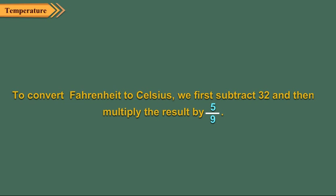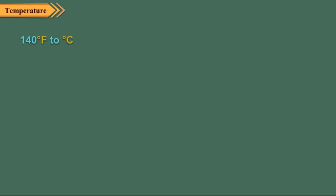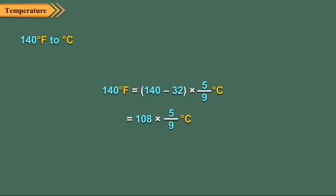To convert Fahrenheit to Celsius, we first subtract 32 and then multiply the result by 5/9. For example, to convert 140 degrees Fahrenheit to degrees Celsius, we first subtract 32 from 140 to get 108. Then we multiply 108 by 5/9 to get the required temperature as 60 degrees Celsius.